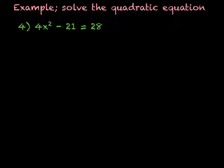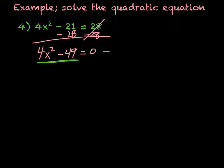For this last example, we want to first solve for 0, and then see how we can factor out. So what I'm going to do is subtract 28 from both sides. So giving me 4x² - 49, which equals 0. So now I want to factor this out. I should recognize this is a difference of squares.